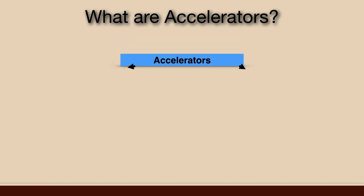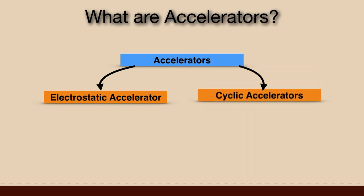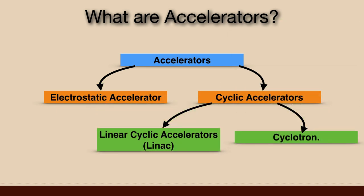Accelerators are of two types: electrostatic accelerator and cyclic accelerators. And cyclic accelerators are again of two types: linear cyclic accelerator or cyclotron.